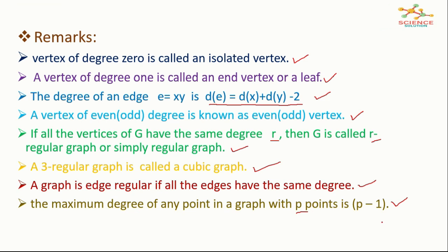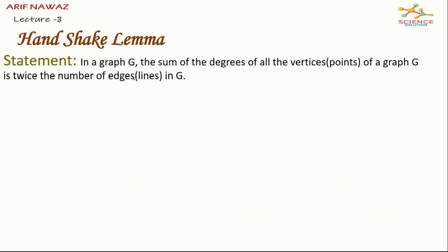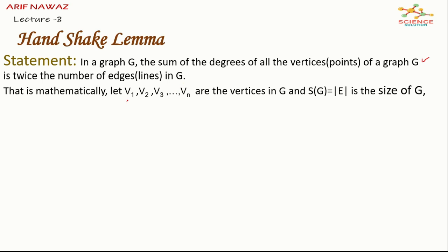Here we define a theorem which is known as handshake lemma. It is stated as in a graph g the sum of the degrees of all the vertices of a graph g is twice the number of edges in g. That is mathematically let v1, v2, v3 so on vn are the vertices in g and s of g is the size of g, then summation of degrees of 1 to n vertices is equal to twice the size of g.